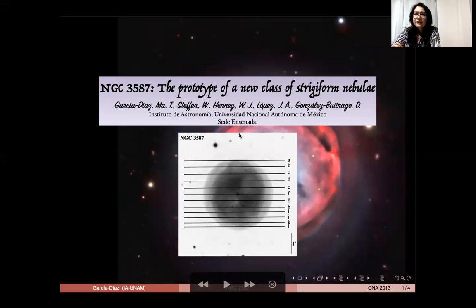We present the result of long slit shell spectroscopy observation of H-alpha nitrogen two emission lines of the Owl Nebula. In this figure we show the location of the slits.